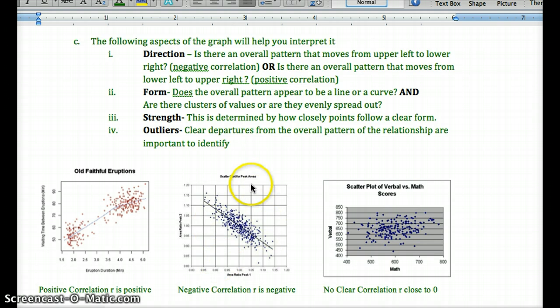A negative correlation would be the opposite. If as the x-axis, as values here increase, the values on the y-axis decrease, so we'd have a slope of the best fit line going from the upper left to the lower right of the graph. So this would be a negative correlation, whereas this was a positive.